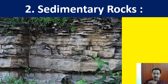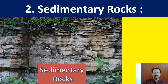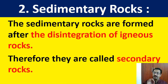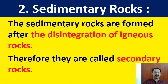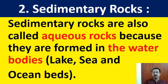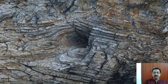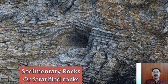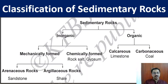Therefore, sedimentary rocks are also called stratified rocks. You can observe the layers after layers in the picture — those are sedimentary rocks. Sedimentary rocks are also called aqueous rocks because they are formed in or near water bodies such as lakes, seas, and ocean beds. You can see the stratified layers clearly in the rock pictures shown.